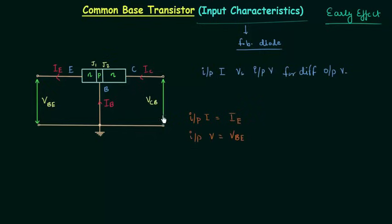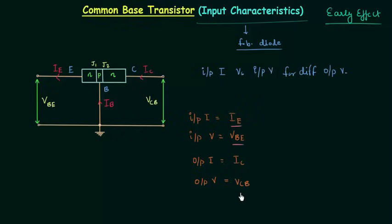On the output side the current is IC. So the output current is equal to IC, the collector current, and VCB is the output voltage. We have to plot the graphical relation between IE and VBE for different values of VCB. Now I will prove the input characteristics of common base transistor is similar to the characteristics of a forward biased diode.